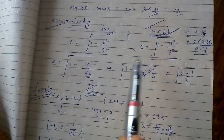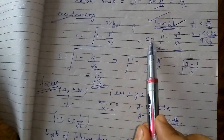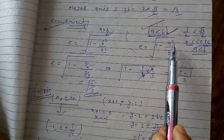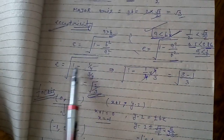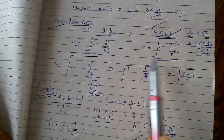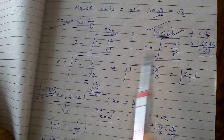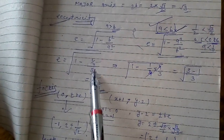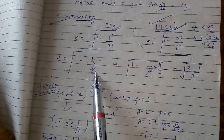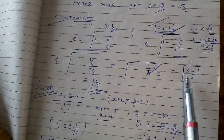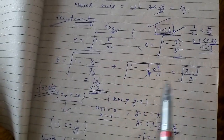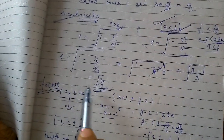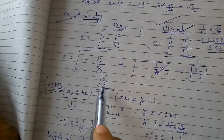Since a is less than b, we apply the formula e equals under root 1 minus a squared by b squared. Substituting a squared equal to 1 by 4 and b squared equal to 3 by 4, we simplify and get the value of eccentricity equal to root 2 by 3.